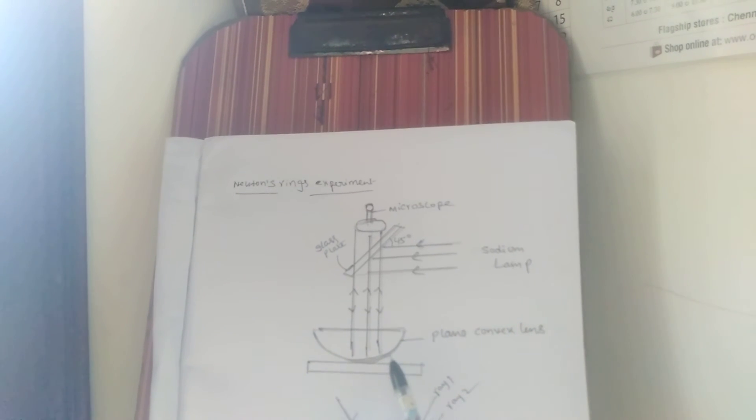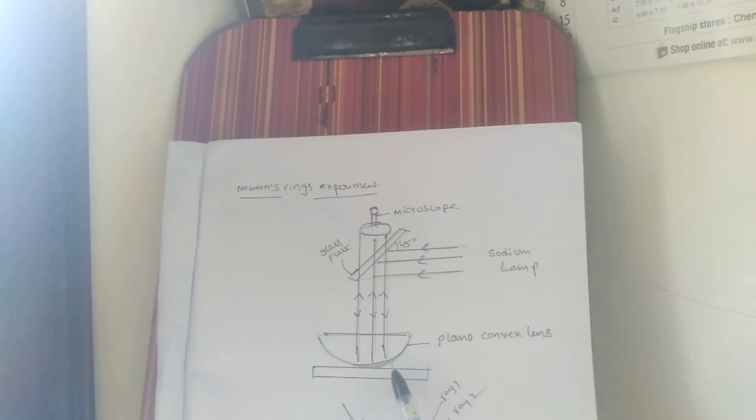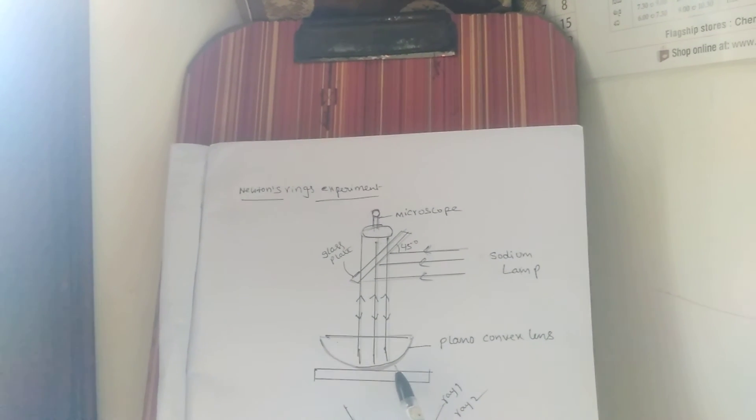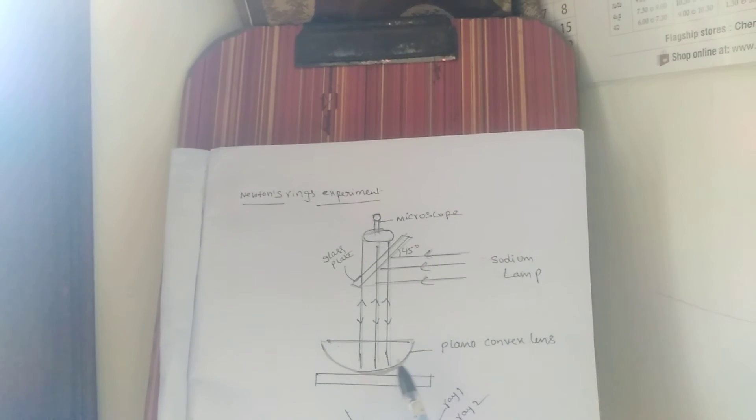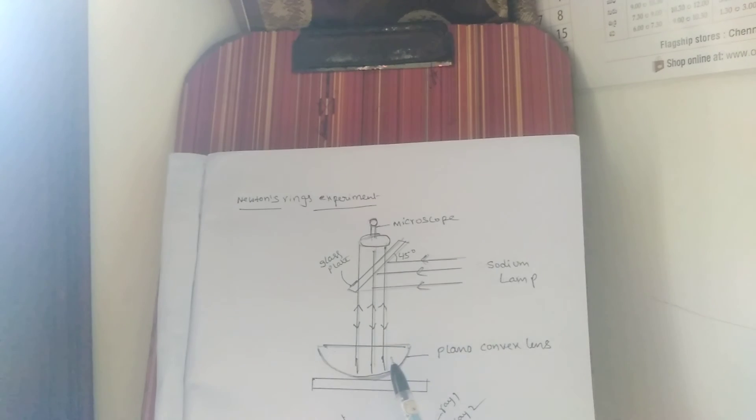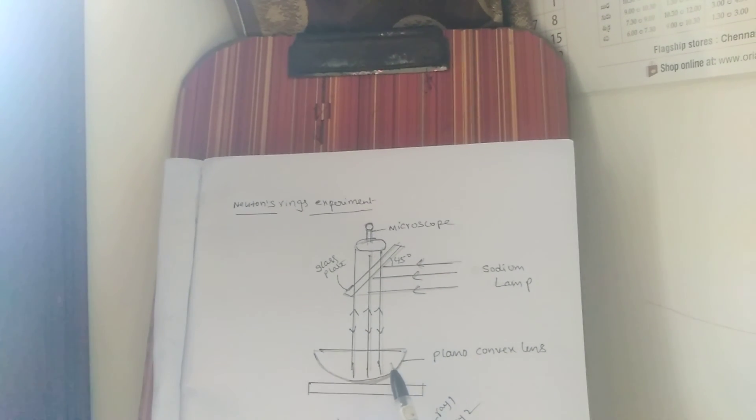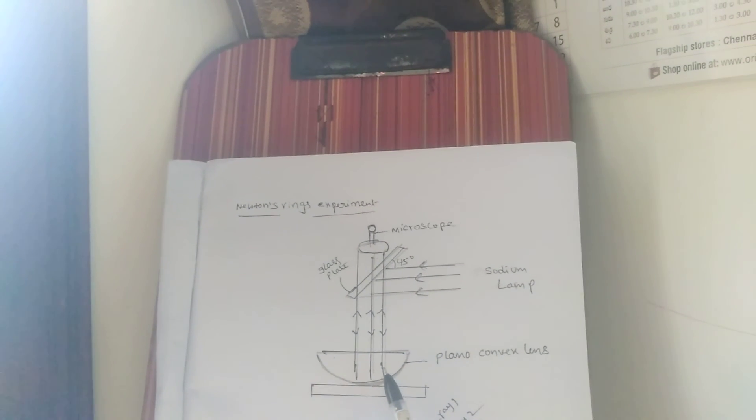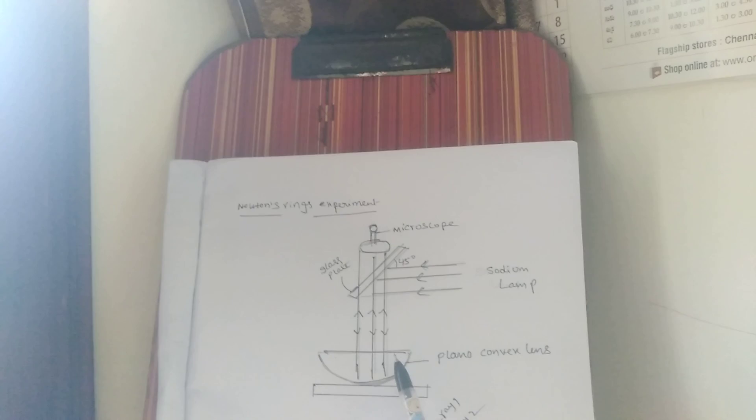The first one is ray one and the second one is ray two. Both these rays interfere and produce interference bands.